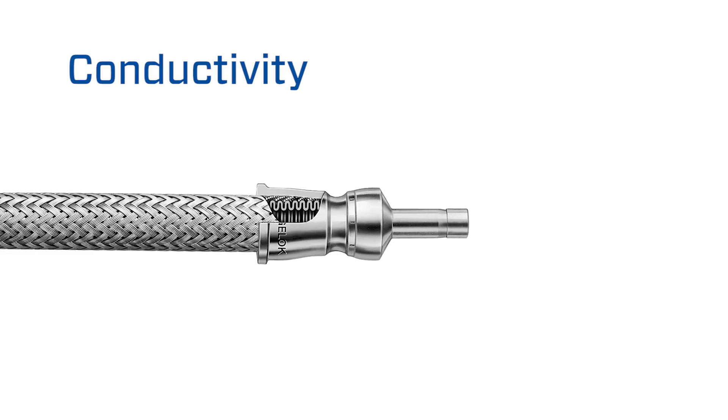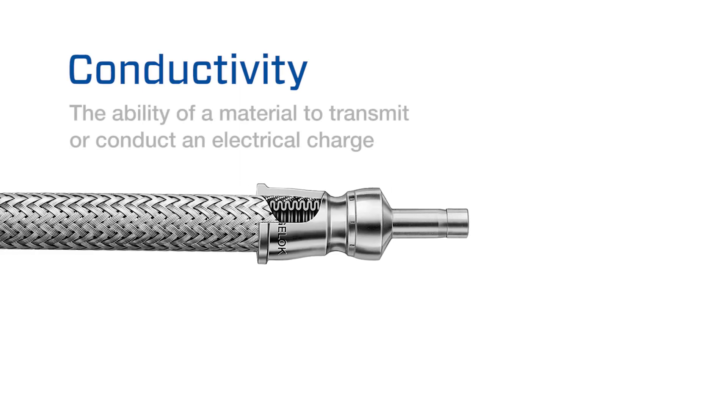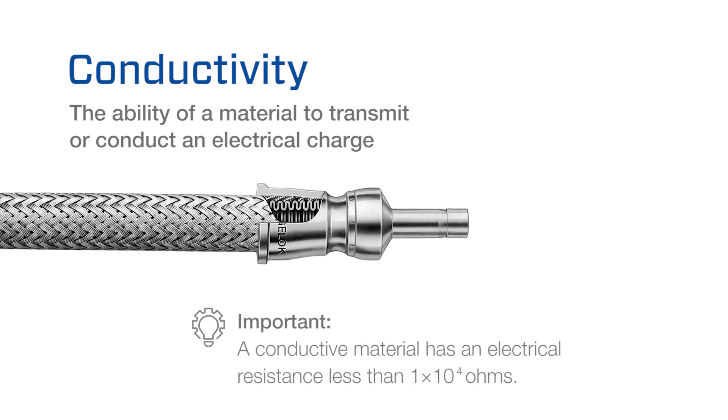Conductivity, meanwhile, is the ability of a material to transmit or conduct an electrical charge. A conductive material has an electrical resistance less than 1×10⁴ ohms.